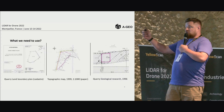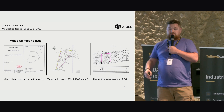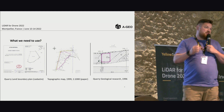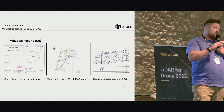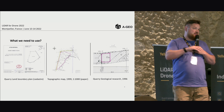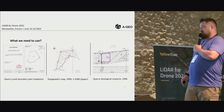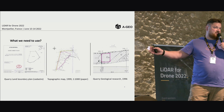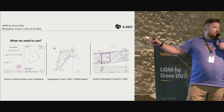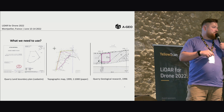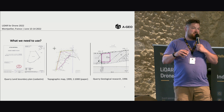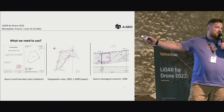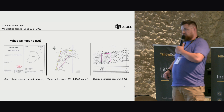What we received from the government was the quarry land border plan — the cadastral plan. It was in coordinates, which was really nice, so it had been measured before. Next, we have the topographic map from 1999, which was only on paper. We don't have any digital data from before, because something happened with the person who made the topographic map.